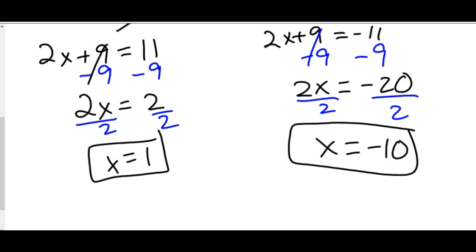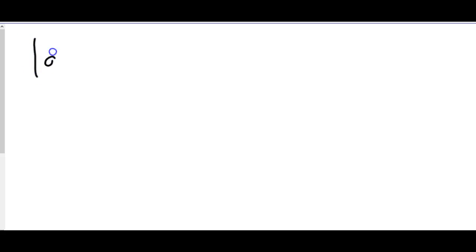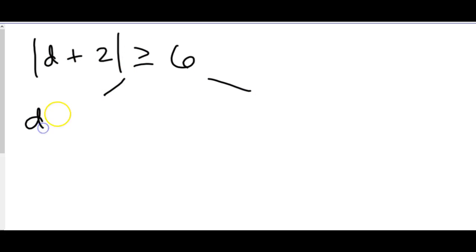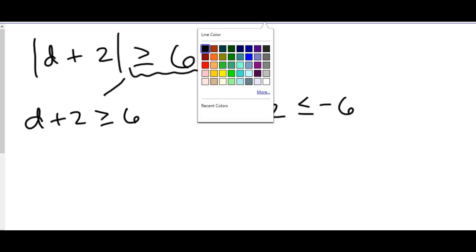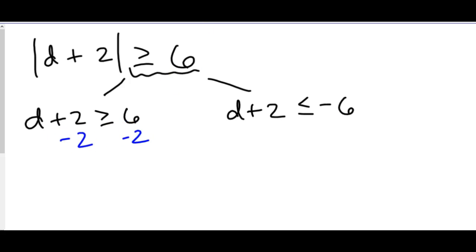Now for inequalities — if we have a greater than, less than, greater than or equal to, or less than or equal to sign, there's a different step at the end. We still get the absolute value piece alone, and we still split into two separate equations. On the first equation nothing changes. On the second equation the left side stays the same, but we change two things: we flip the inequality sign and make the number on the right negative. Once done, we solve for the variable. For this example, d is greater than or equal to 4, and on the second equation d is less than or equal to negative 8.